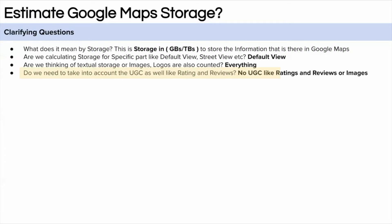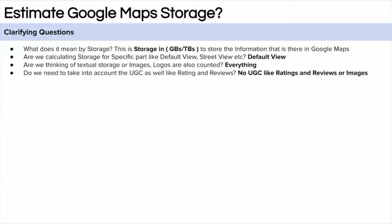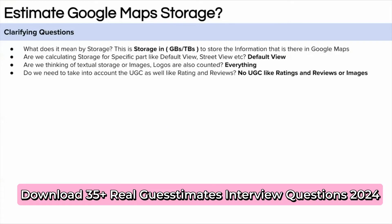The fourth question is about user-generated content, that is UGC. Do we need to think about UGC as well? Because for every location, external people can also put a lot of images in terms of ratings and reviews. There are 1,000 to 1,500 photos for a popular location. For this question, let's assume that we are not considering any user-generated content.